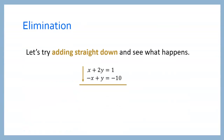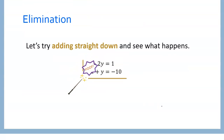Here we have a system of equations: x plus 2y equals 1, and negative x plus y equals negative 10. We're going to try adding them straight down and seeing what happens. So x minus x — that's going to be 0. The x's disappear. And what we're left with is 2y plus y, that's going to be 3y.